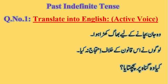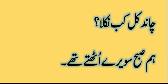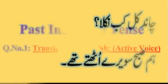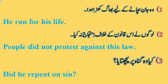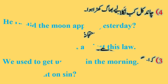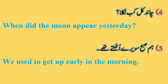Now we are going to translate sentences into English active voice form. First, read the Urdu sentences then translate. First: 'Wo jaan bachane ke liye bhaaga' — He ran for his life. Second: People did not protest against this law. Third: 'Kya wo gunah pe pachitaya?' — Did he repent on sin? Fourth: 'Chand kal kab nikla?' — When did the moon appear yesterday? Fifth: 'Hum subah suvere uthte the' — We used to get up early in the morning.